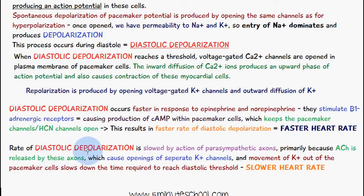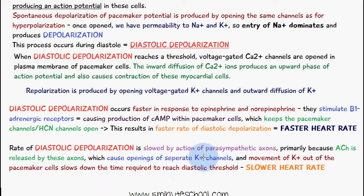The rate of diastolic depolarization is slowed by the action of parasympathetic axons, primarily because acetylcholine is released by these axons. This causes the opening of separate potassium channels and movement of potassium out of the pacemaker cells, slowing down the time required to reach diastolic threshold and producing a slower heart rate.